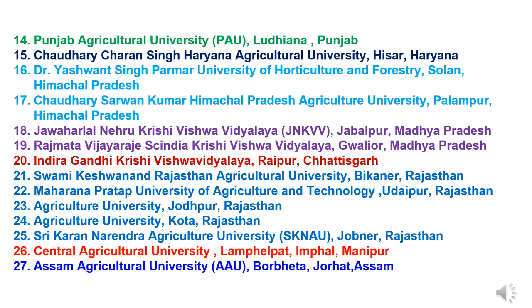Agriculture universities in Rajasthan: Twenty-first is Swami Keshwanand Rajasthan Agriculture University, Bikaner, Rajasthan. Twenty-second is Maharana Pratap University of Agriculture and Technology, Udaipur, Rajasthan. Twenty-third is Agriculture University, Jodhpur, Rajasthan. Twenty-fourth is Agriculture University, Kota, Rajasthan. Twenty-fifth is Shri Karan Narendra Agriculture University, SKNAU, Jobner, Rajasthan. Twenty-sixth is Central Agriculture University, Lamphelpat, Imphal, Manipur.